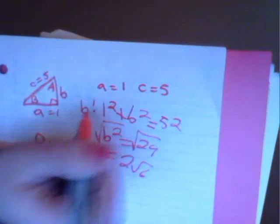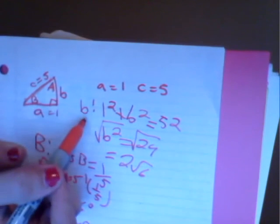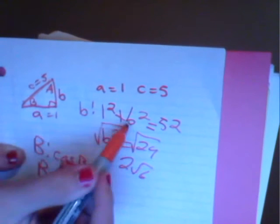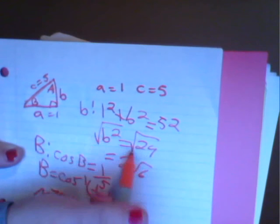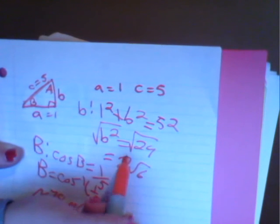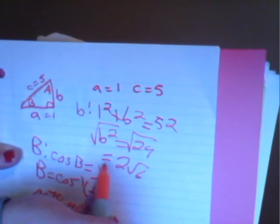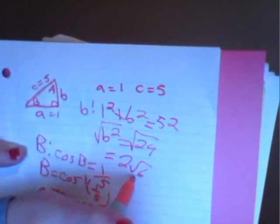We're going to find side B by using the Pythagorean theorem. 1 squared plus B squared equals 5 squared. The square root of B squared equals the square root of 24, which equals 2 square root of 6.